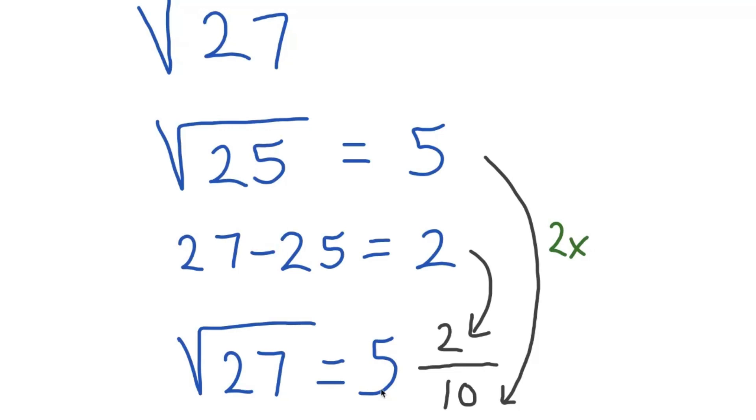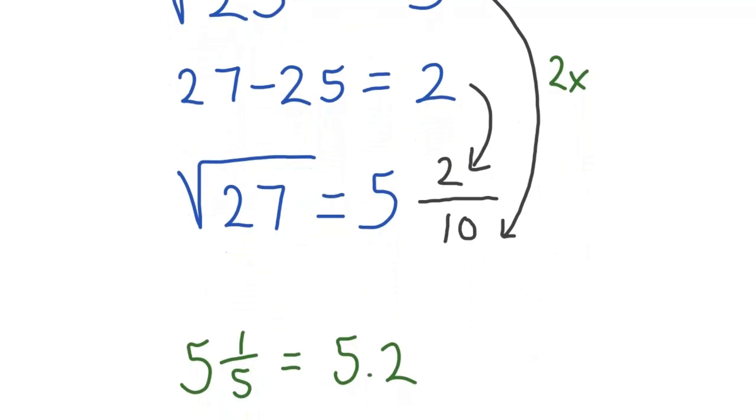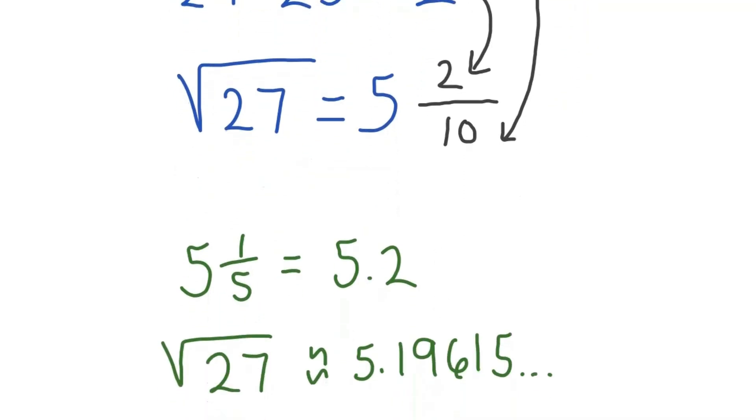So we get 5 and 2 tenths, which simplifies to 5 and 1 fifth, which as a decimal is 5.2, and the exact value of square root 27 is 5.19615, etc. You can see how close we got there.